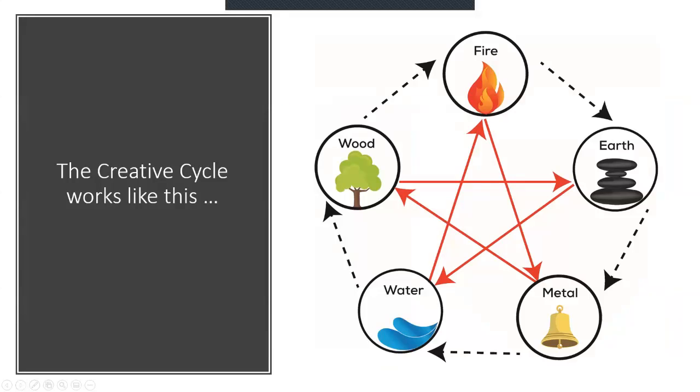The creative cycle works like this. The wood element, which is vegetation and trees, that feeds the element of fire, creates more of the fire energy.